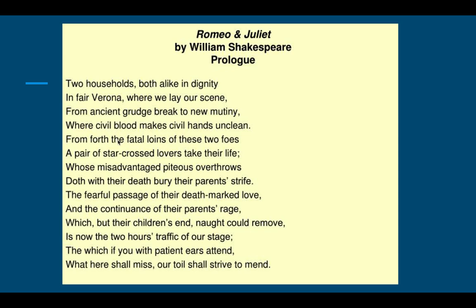From forth the fatal loins — 'loins' refers to the reproductive organs around the midsection, so from the reproduction of these two foes we've got children. 'A pair of star-crossed lovers take their life' — when the stars are aligning things go well, but when they're crossed things don't go so well. Another reference to fate here, and we learn that they take their life.